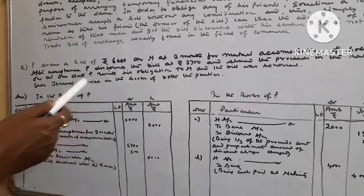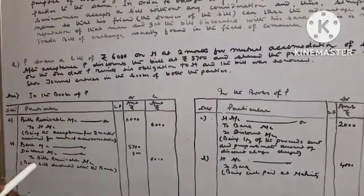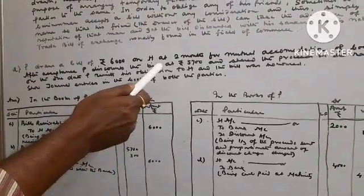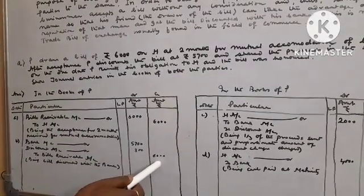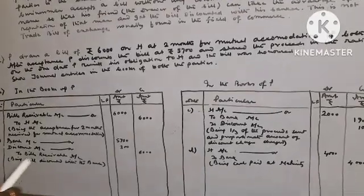Now, P discounts the Bill with the bank. Entry will be Bank account debit, Discount account debit to Bill Receivable account. The bank amount given in the question is 5,700. The Bill value is 6,000. The difference is the discount, which is debited.